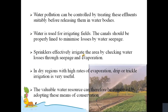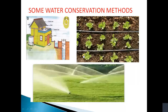Rainwater harvesting is also helping in conserving water resources. It involves collecting rainwater from rooftops, directing it to an appropriate location, and storing it for future use. On average, one spell of rain lasting two hours is enough to save 8,000 liters of water. Water conservation methods include rainwater harvesting, water percolation, and the use of sprinklers in gardens.